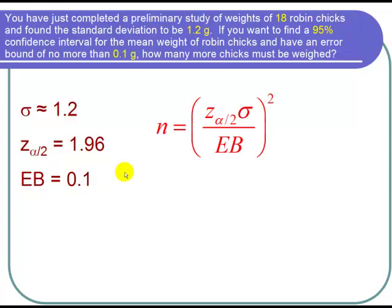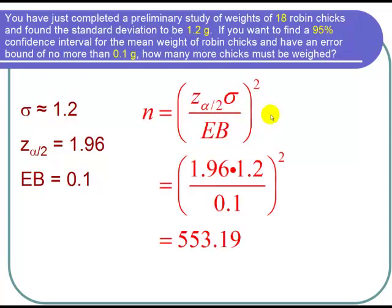So now the formula to find n, to find the sample size, is z sub alpha over 2 times sigma over the error bound quantity squared. So now I just plug in, z sub alpha over 2 is 1.96, sigma was about 1.2, and EB is 0.1. So I put that in my calculator and I got 553.19.